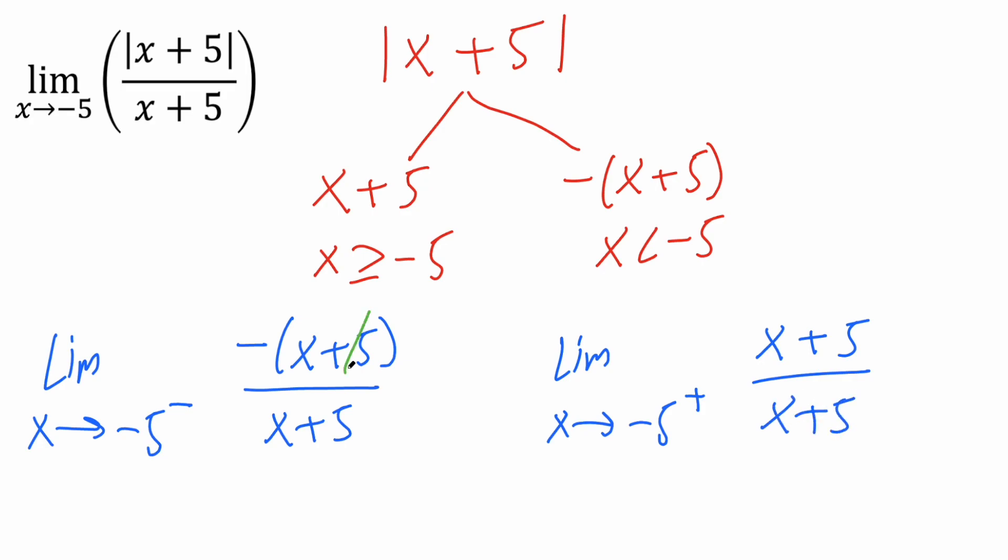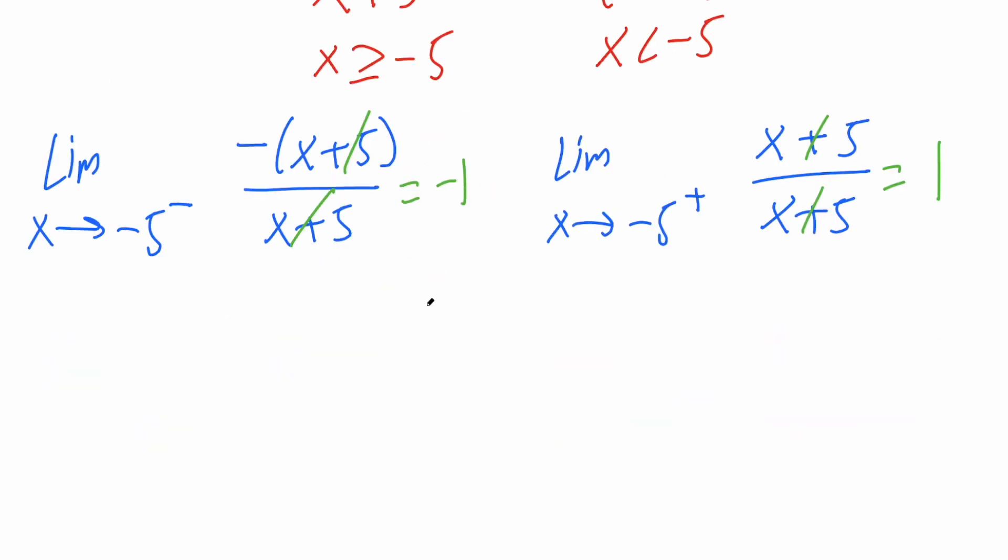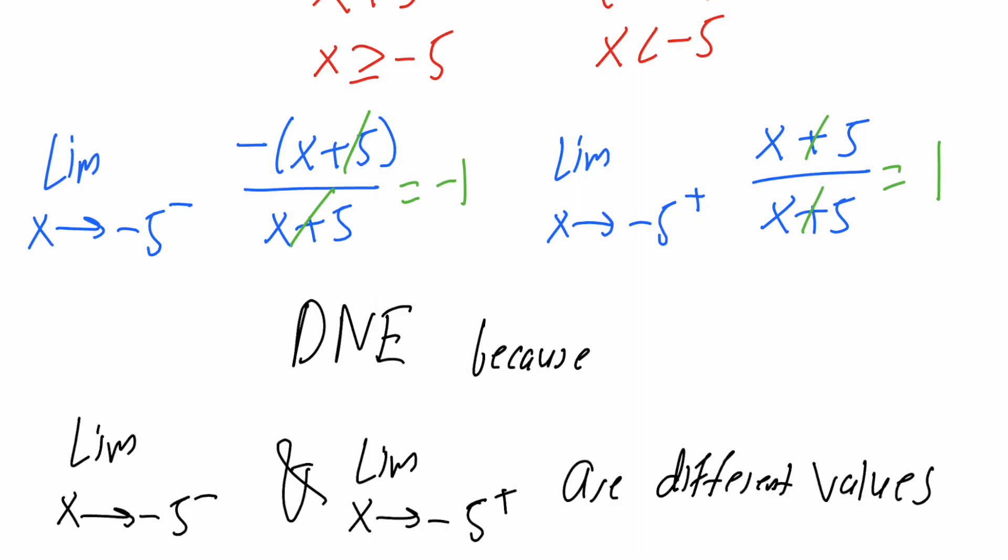Now the x plus 5 cancel out. And we get negative 1 for this one, because we have a negative right here. x plus 5 cancels out, and we get a 1. And because both values are different, the limit does not exist. And that's pretty much it for this video.